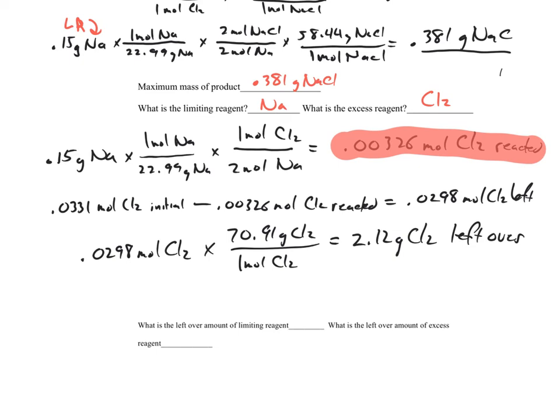That's how much is left over. What is the leftover amount of limiting reagent? That's going to be 2.12 grams of Cl₂. Wait, that's wrong. It's zero grams of sodium. And what is the amount of excess reagent left over? That's going to be 2.12 grams of chlorine.